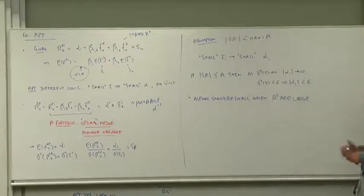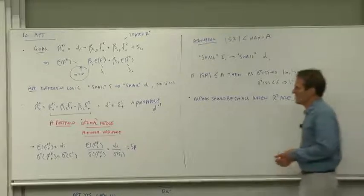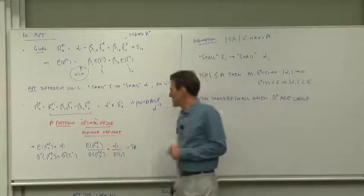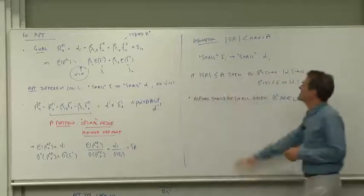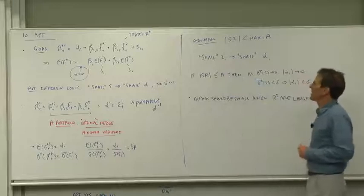Sharpe ratios beyond some certain upper bound just don't survive and those expected returns will be driven down again. Well, if that's true, if the Sharpe ratios are bounded by something, then small errors must mean small alphas.